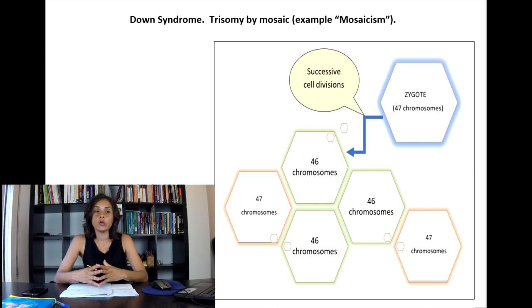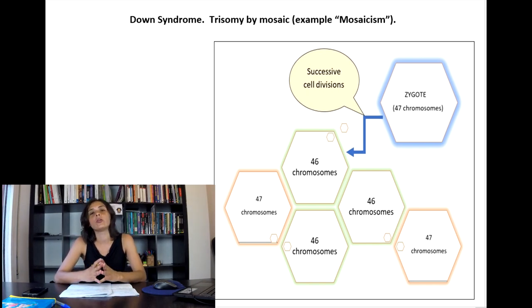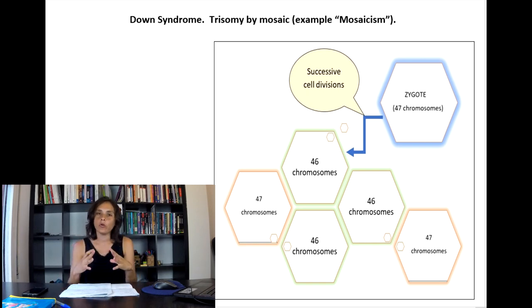Now, we have a situation in which mosaicism can happen. For example, we have a zygote that has received 47 chromosomes since its beginning. We know that the normal is 46 chromosomes. And in successive cell division, some cells have lost the extra chromosome and some have not. The result will be an individual with some cells with 46 chromosomes and other cells with 47 chromosomes.